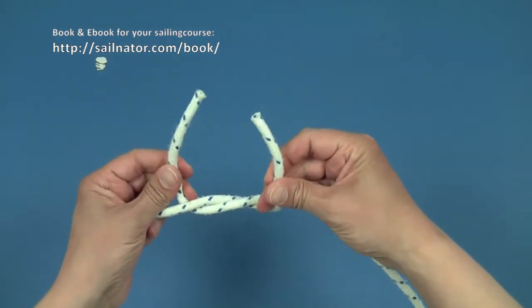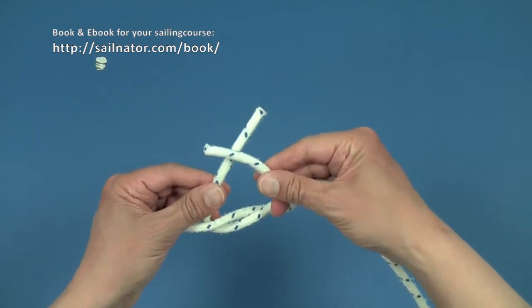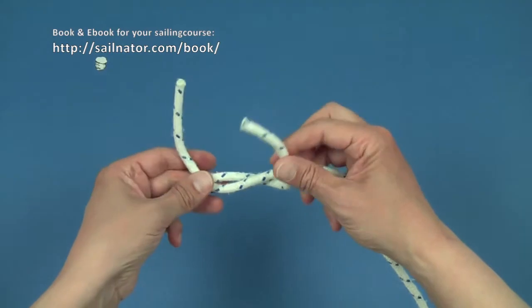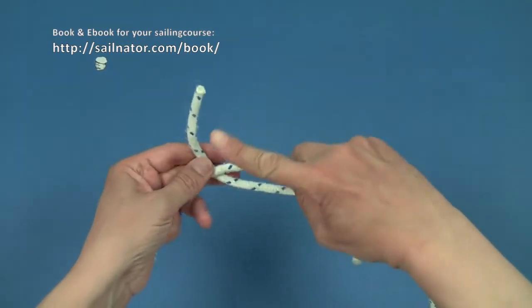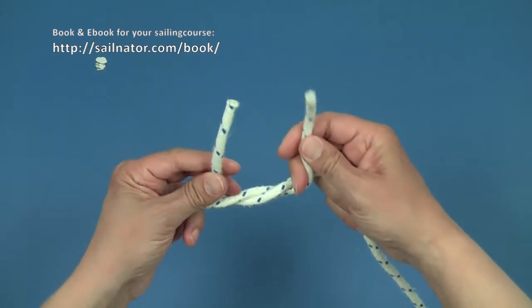For the next step, it is important which of the lines was lying on top at the beginning. I just check it. The end of the line that I now hold in my right hand was lying above.